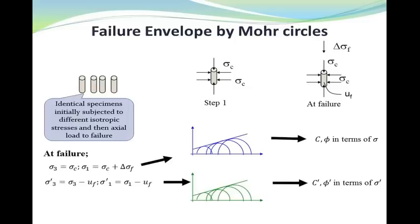For finding the failure envelope by Mohr circles, we need to test several identical specimens. In the first stage, we need to apply the hydrostatic stress condition to the specimen. And in the second stage, we will increase the deviatoric stress or vertical stress to the specimens until the specimen fails. So, with each test, we will have one Mohr circle. So, we need at least three Mohr circles to be able to draw our failure envelope.